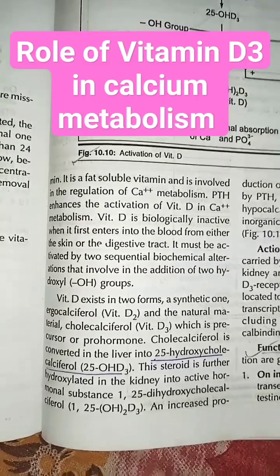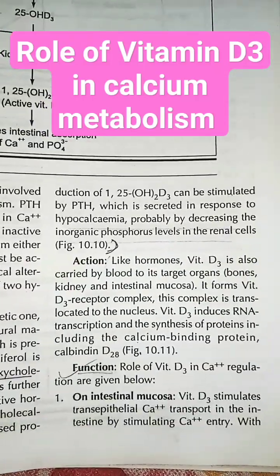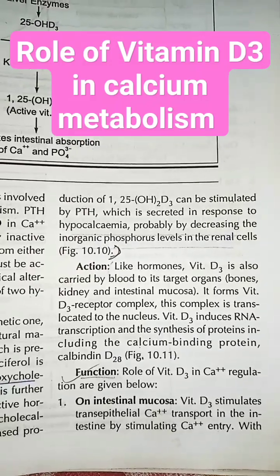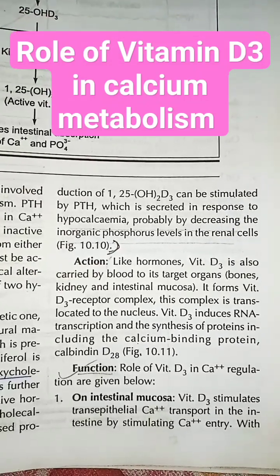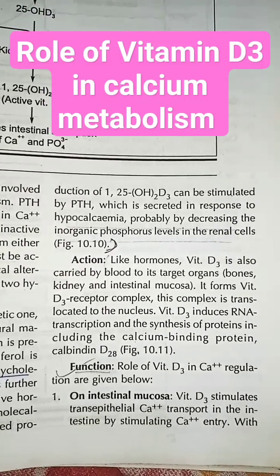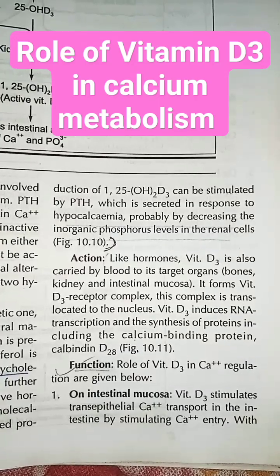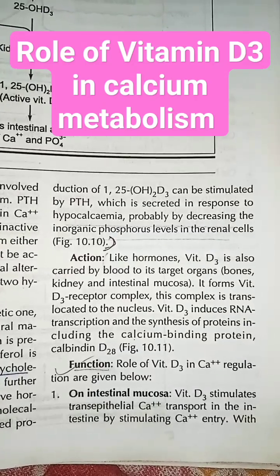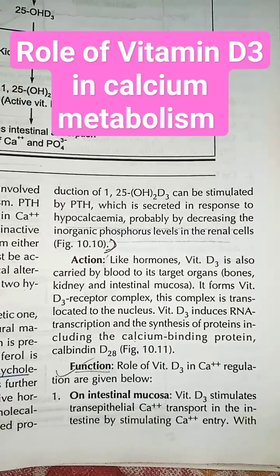An increased production of 1,25-dihydroxycholecalciferol can be stimulated by PTH, which is secreted in response to hypocalcemia, by decreasing the inorganic phosphorus level.